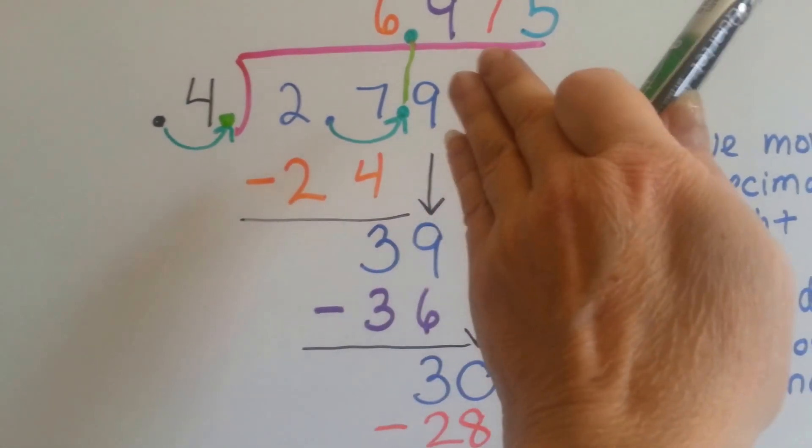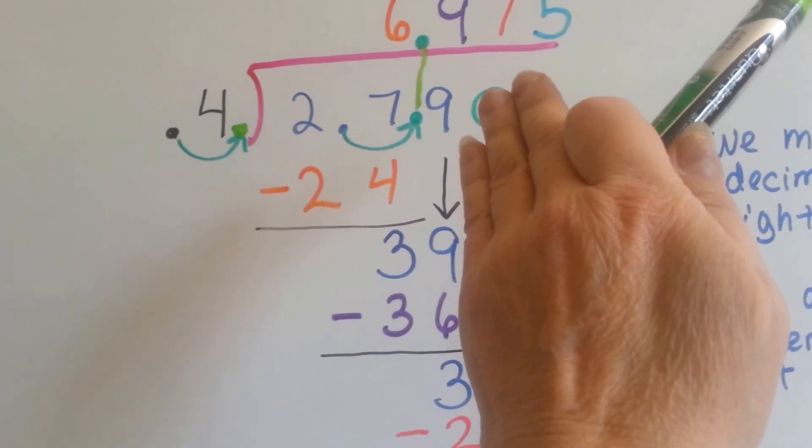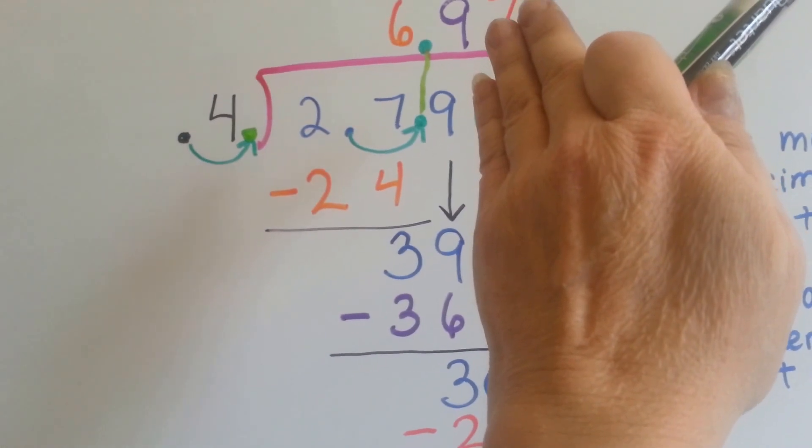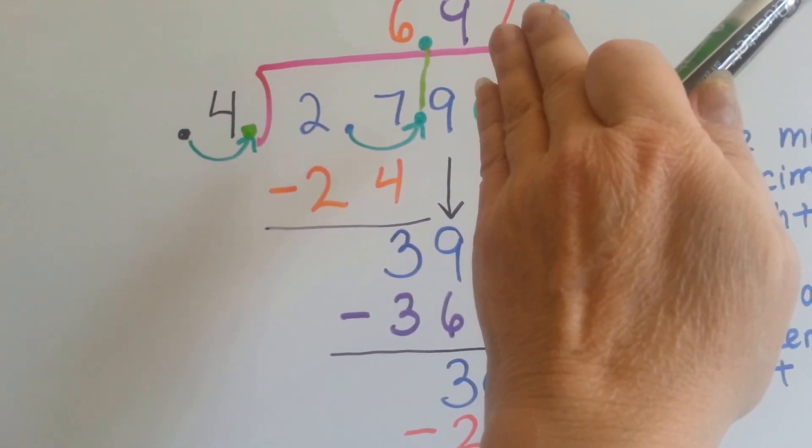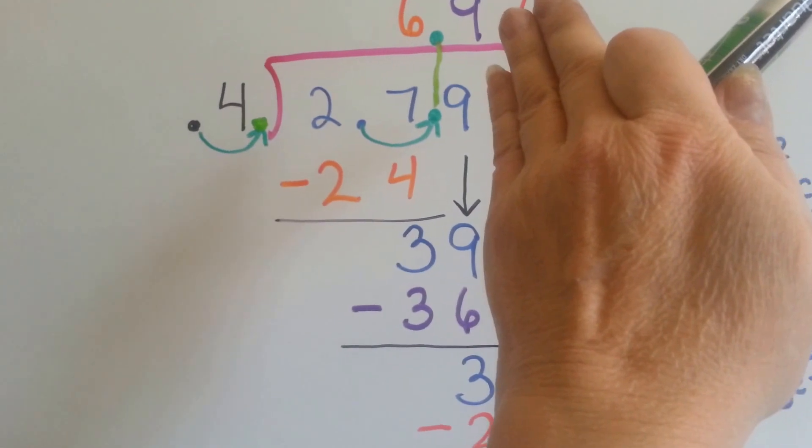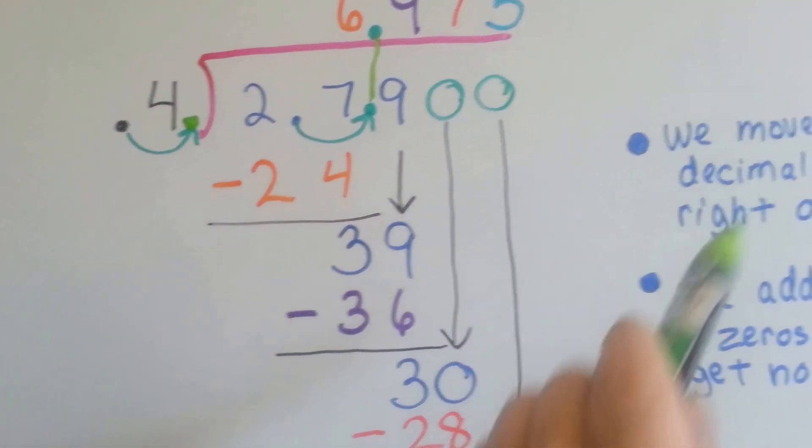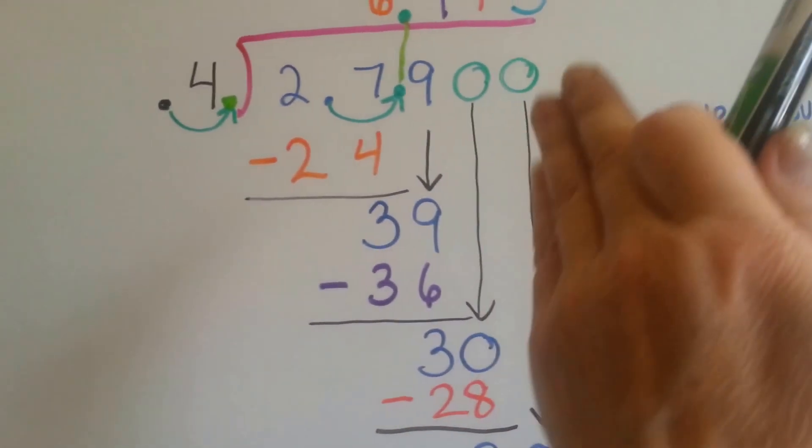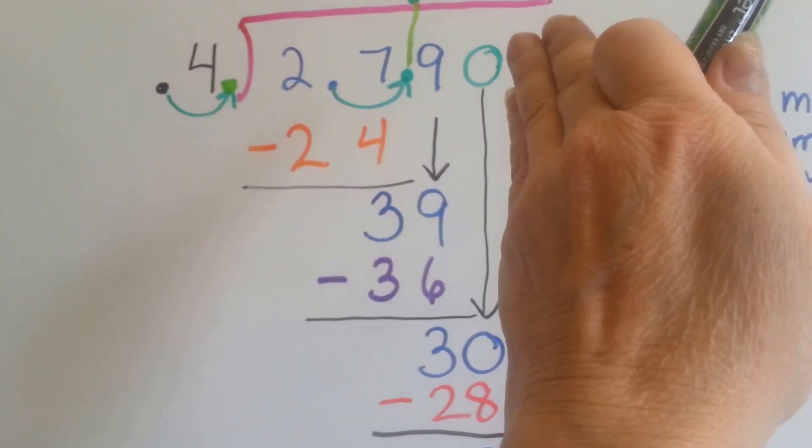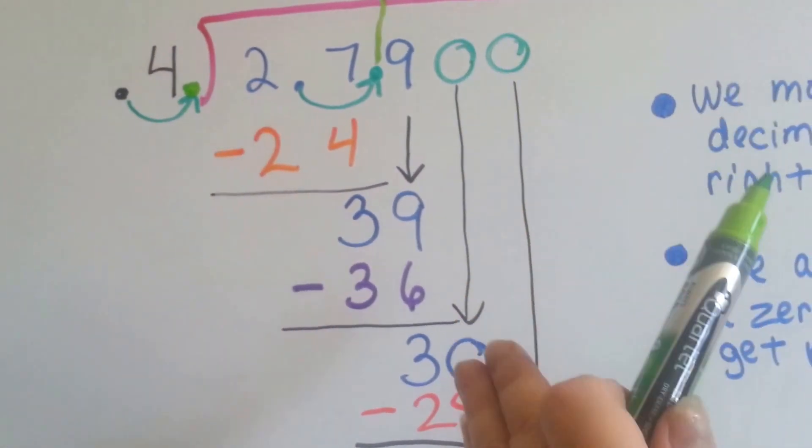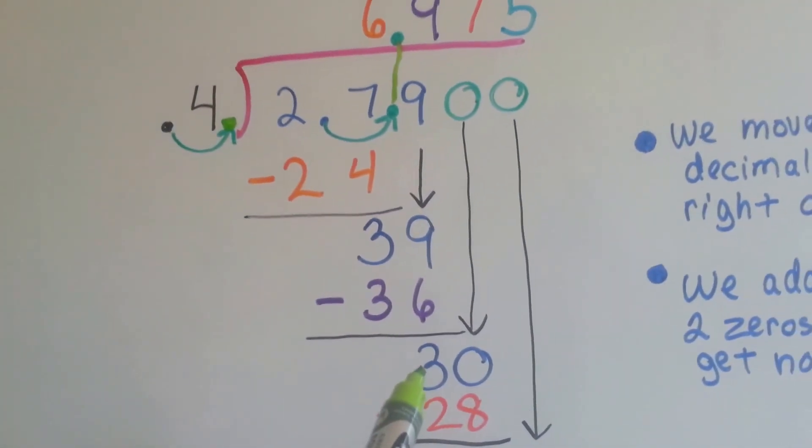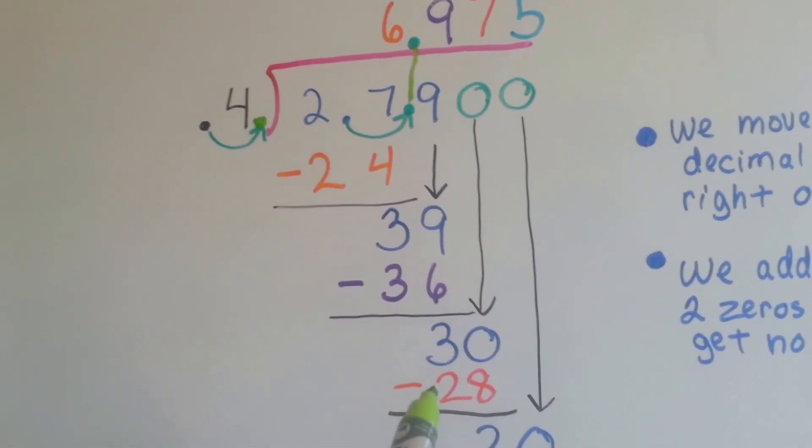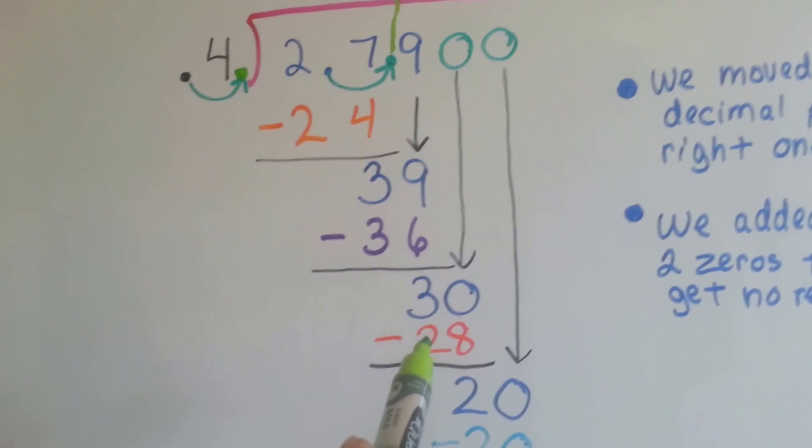Now what do we do? We've stopped, and we've got a decimal point of 6 and 9 tenths, and we've got a 3 remainder. Well, in decimals, you can keep going by adding a 0. So we add 2 0's in this particular problem, so that we can get no remainder. We add 1 0 at first, and then we drop it down, and we say 4 can go into 30 how many times? 7, because 4 times 7 is 28. We do our multiplication. We write it here and subtract, and we get 2.